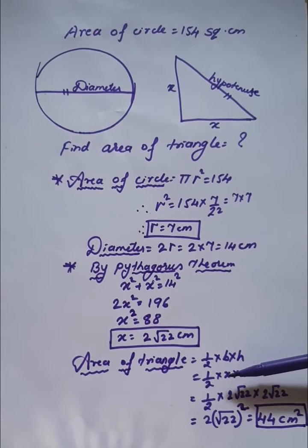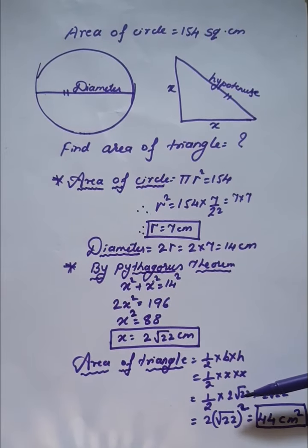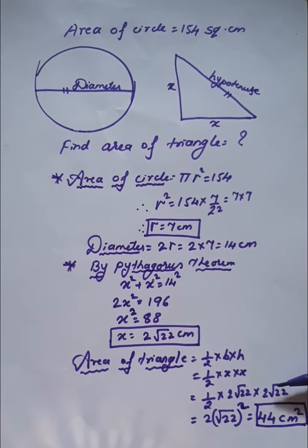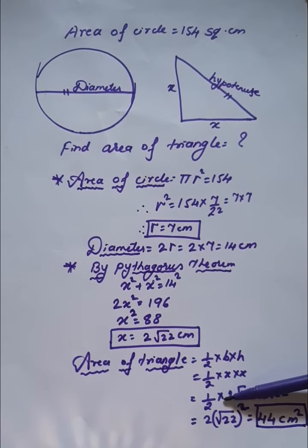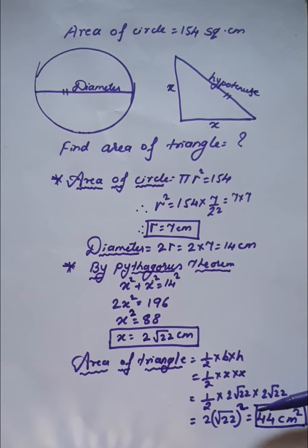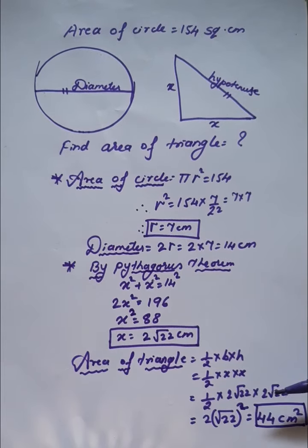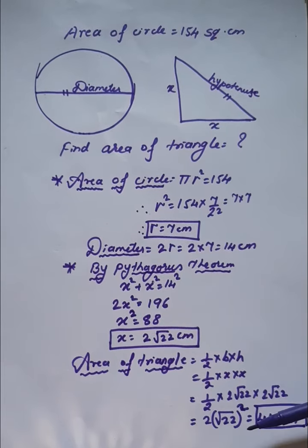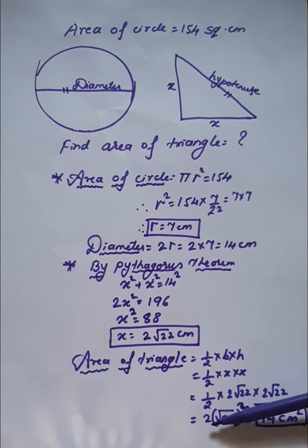The calculation is one-half times 2√22 times 2√22. The 2s cancel out, giving us √22 times √22. When we multiply the square roots, we get 22.